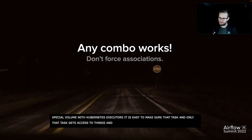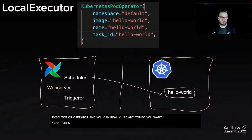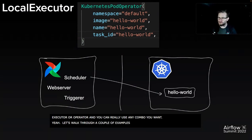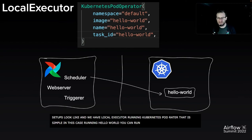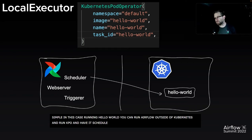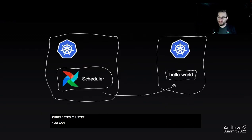Before we continue on, don't force associations between Kubernetes Pod Operator and Kubernetes executor, or really any executor or operator. You really can use any combo you want. Let's walk through a couple of examples. With local executor running a Kubernetes Pod Operator — Hello World — you can run Airflow outside of Kubernetes and have KPO schedule its tasks onto an external Kubernetes cluster. You can also run Airflow in Kubernetes and have that task pod land in the same cluster, or even in an external cluster. So you have a lot of flexibility here.